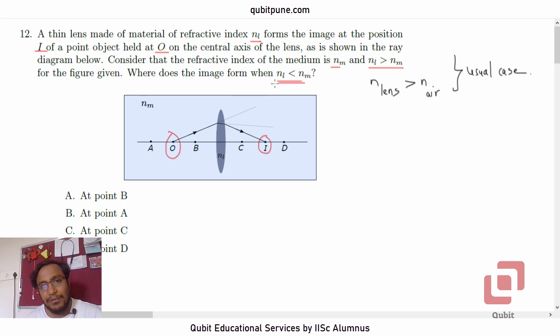But now they are saying where does the image form when NL is less than Nm. So for the case that we want, the refractive index of the lens material is less than that of the medium.